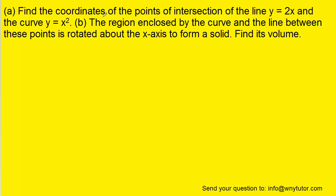For part A, in order to find the coordinates of the points of intersection of the two equations, we can set the two expressions equal to one another. Since this is a quadratic equation, we'll subtract the 2x over to the left-hand side so we can get the equation equal to 0.